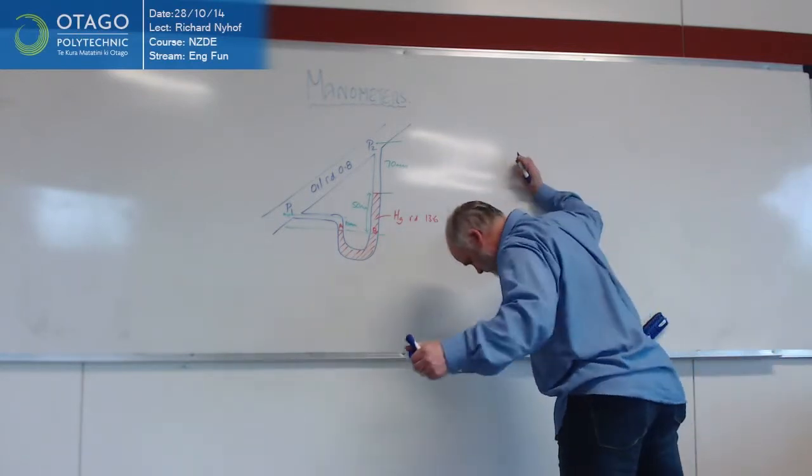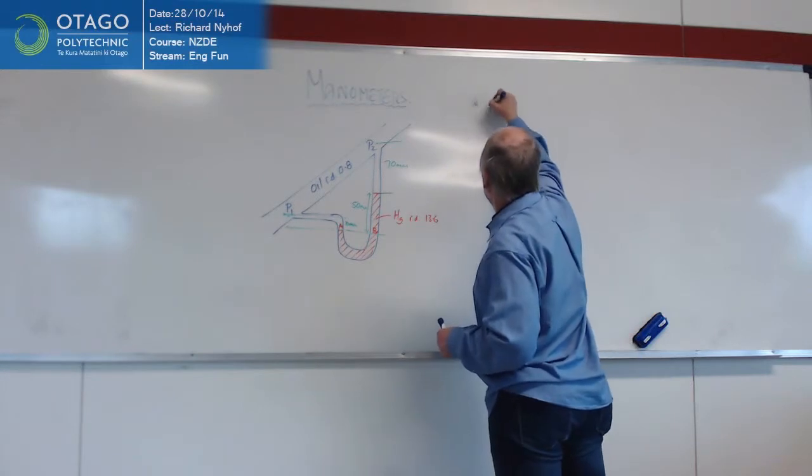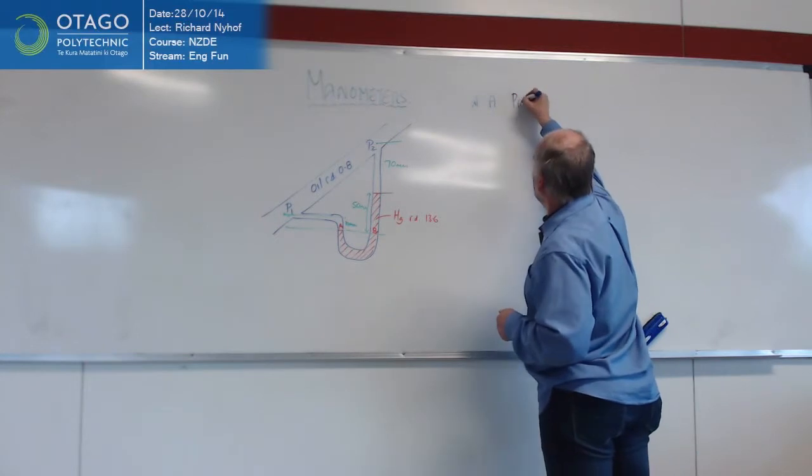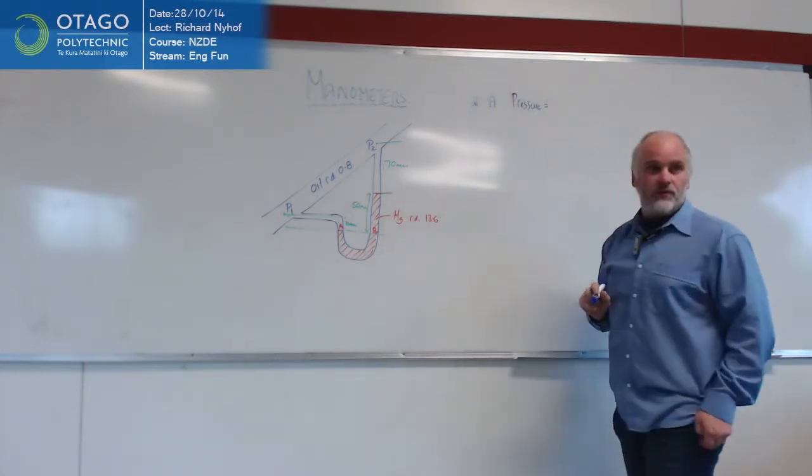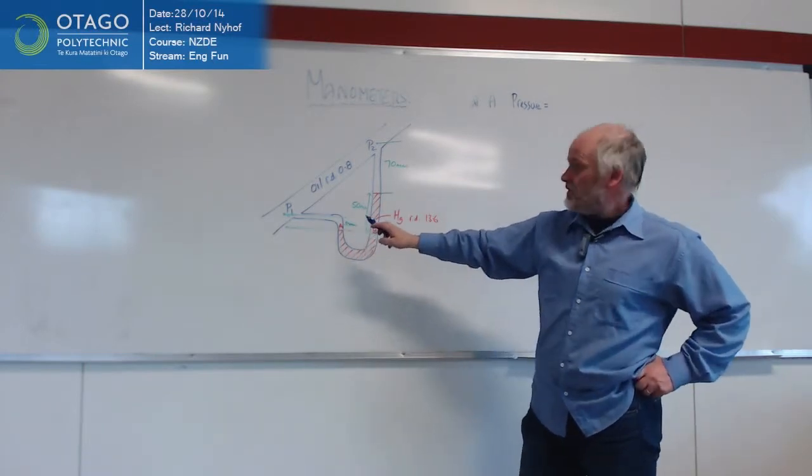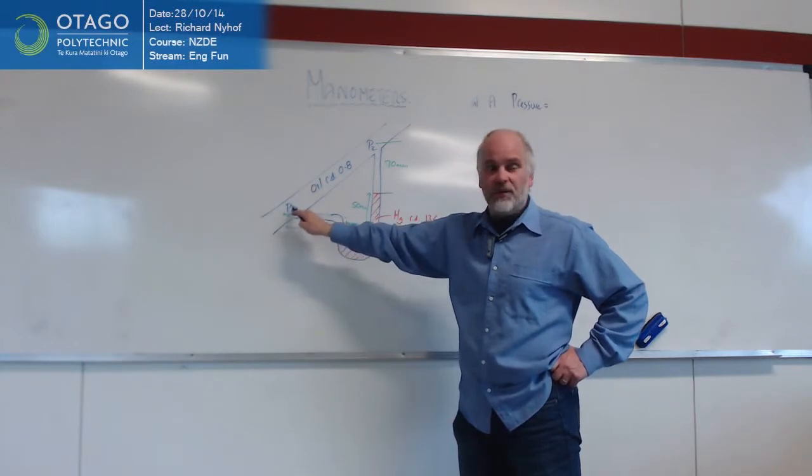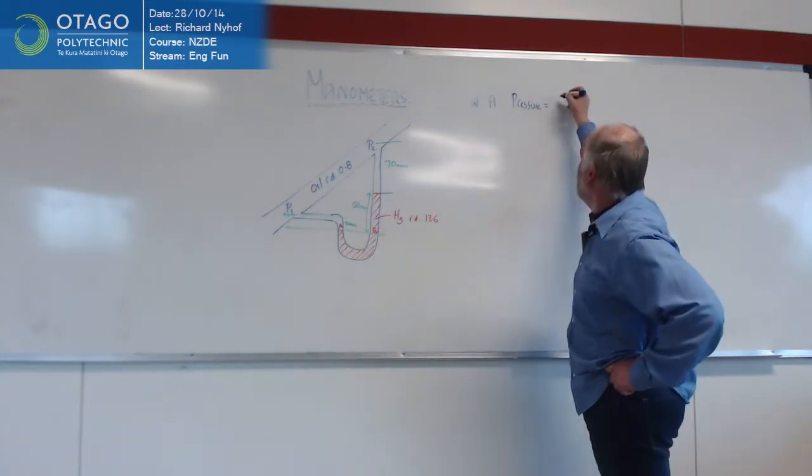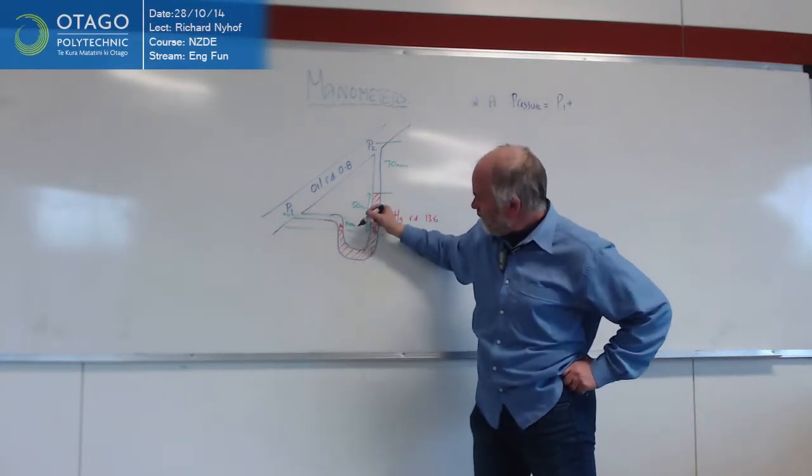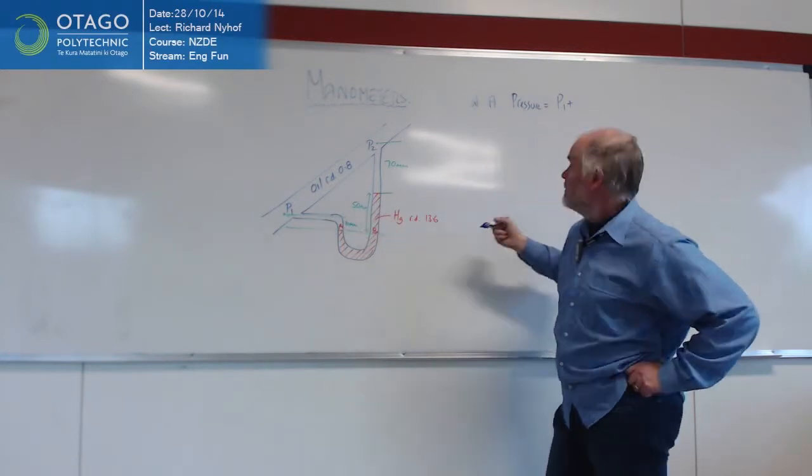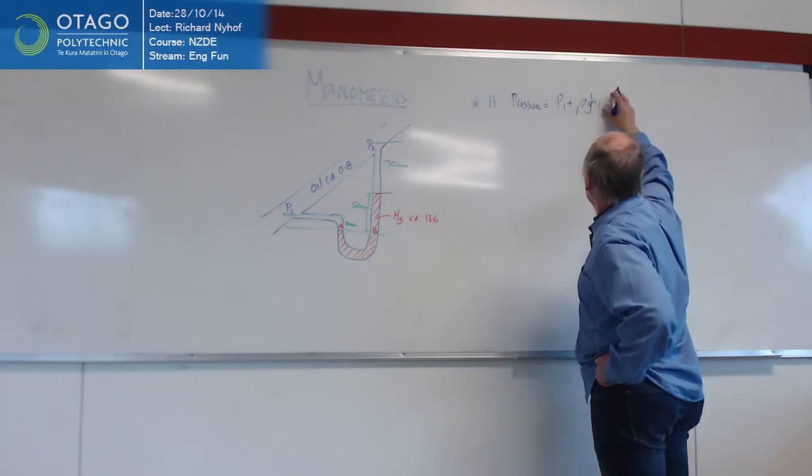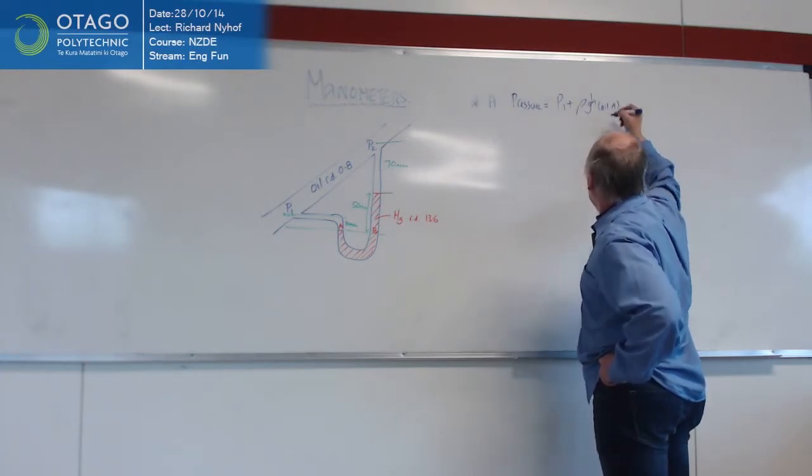So at A, the pressure is equal to - so what's causing pressure at A is definitely the P1 from the pipes, or whatever actual pressure the oil has got in the pipe, is going to be pushing the oil out. And also this head of pressure here. So ρgh of oil at point A.